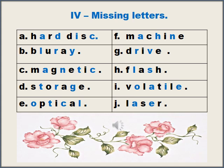Continuing Exercise 4: F: Machine — missing letters are A, H, N, G. G: Drive — missing letters are R and V. H: Flash — missing letters are L, S, I. I: Volatile — missing letters are O, A, I, E. J: Missing letters are A and E.